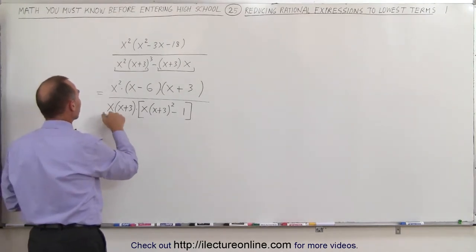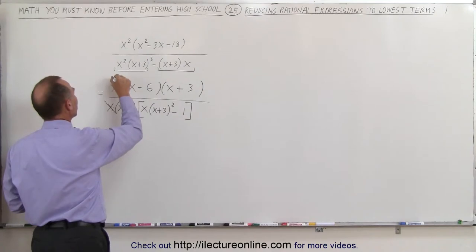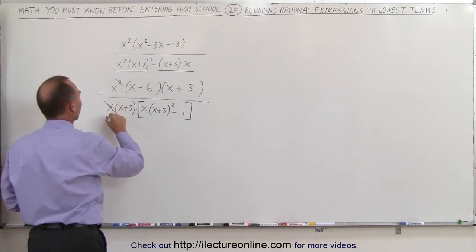So I can divide the denominator by x, and I can divide the numerator by an x. So instead of x squared, I have x, and here I have a 1.